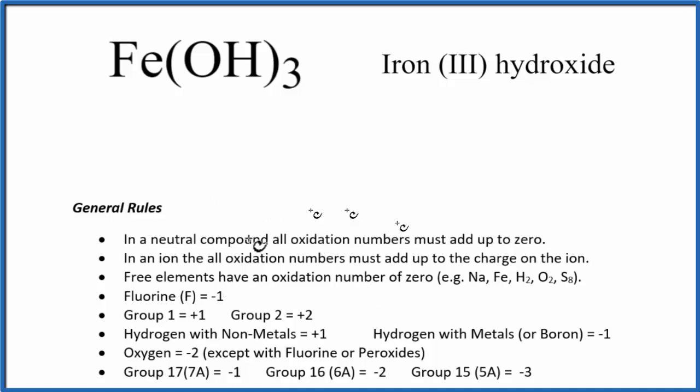So our second rule here is if we have an ion, all the oxidation numbers are going to add up to the charge on the ion. So the hydroxide here, you should know that has a 1 minus charge. That's a real good one to memorize. So we have our minus charge for the hydroxide times the 3, so that should give us a minus 3.